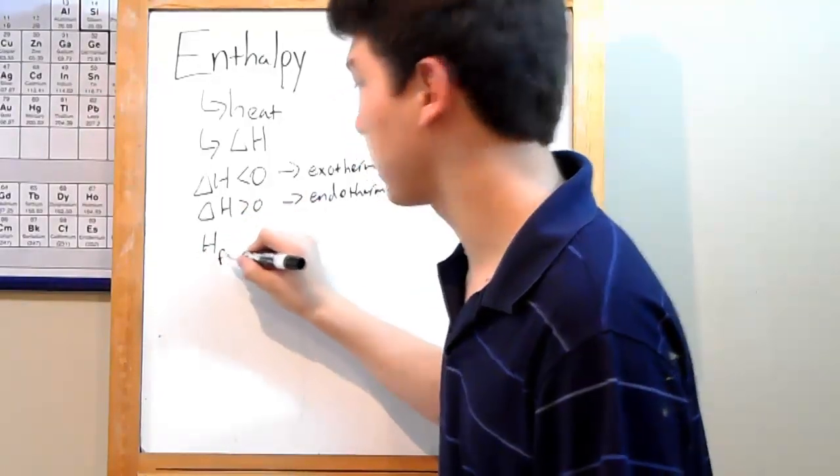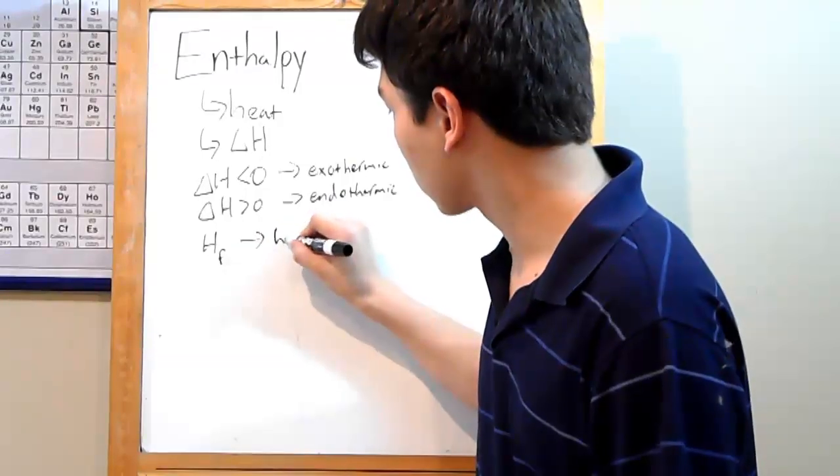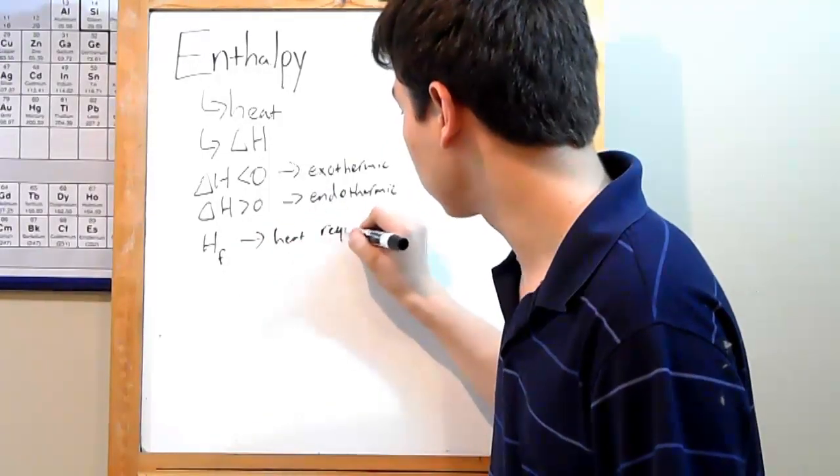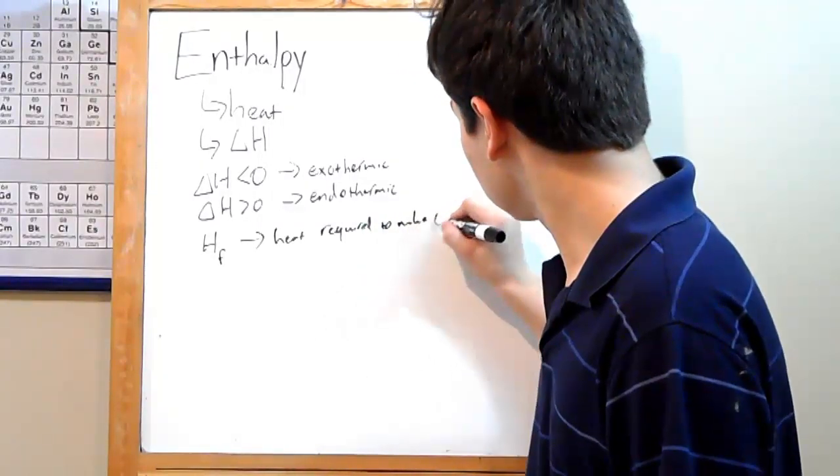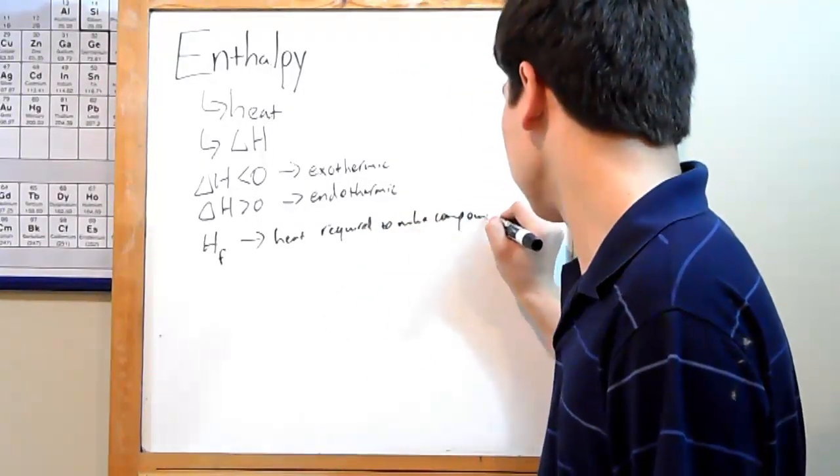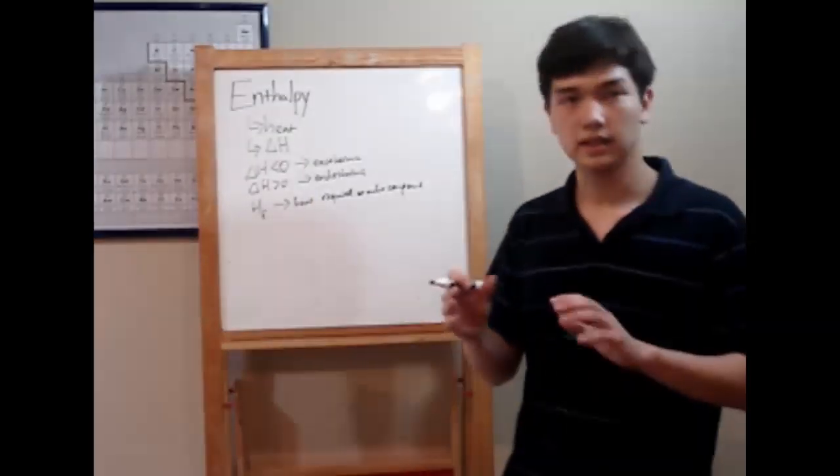That's generally denoted H sub F. And what that is, it's the heat required to make a compound. So if you've got a negative number for this, it means that heat is released to make that compound. A positive number, heat was put in.